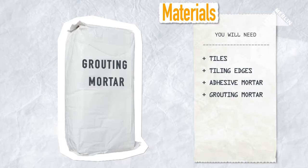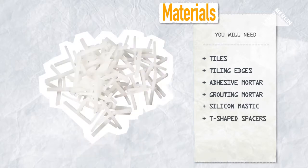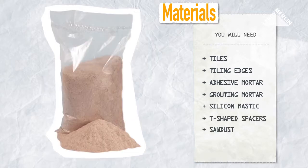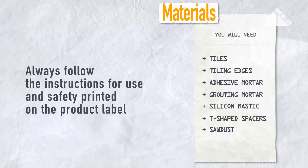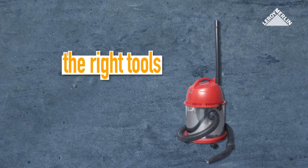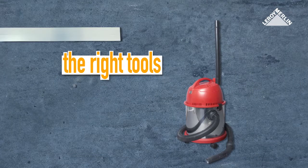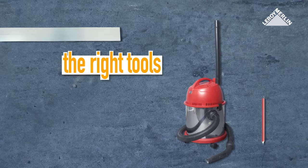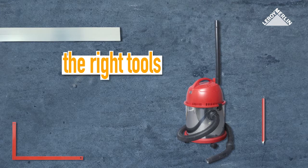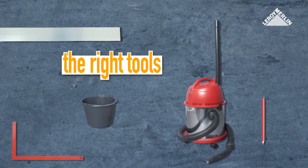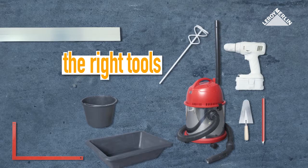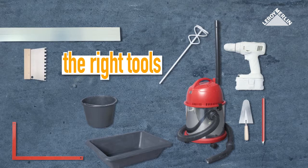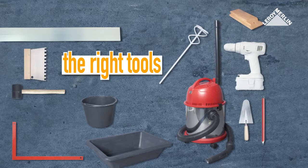You will need a heavy-duty vacuum cleaner, a long mason's ruler, a pencil, a mason set square, a bucket, a drill with a mixer, a tray, a trowel, a notch spatula, a tiler's float and a tiler's mallet.